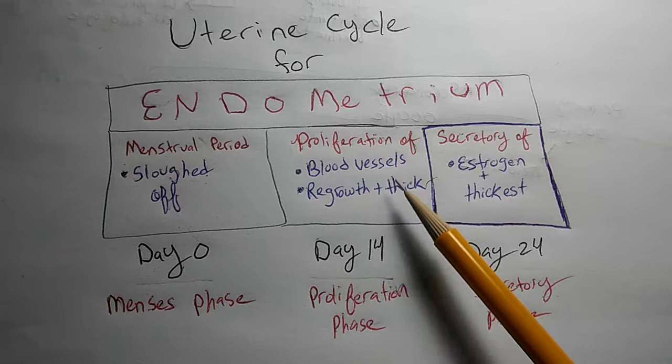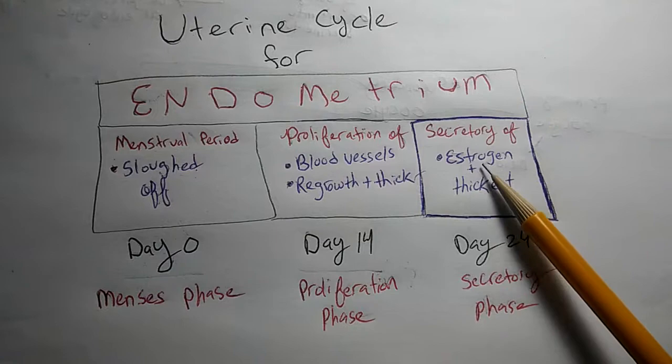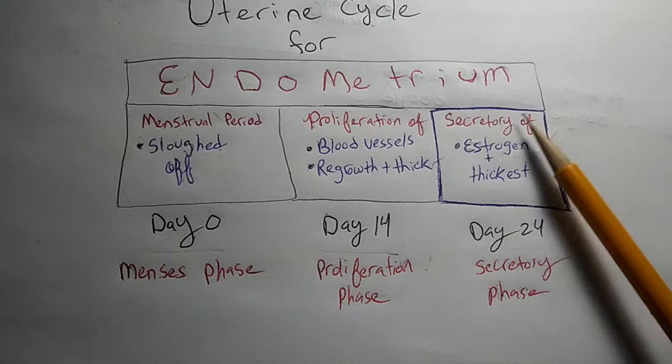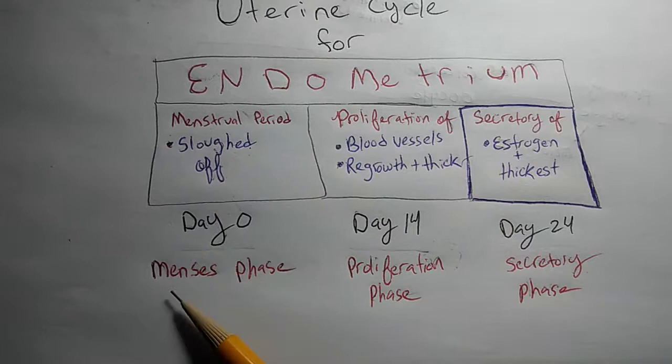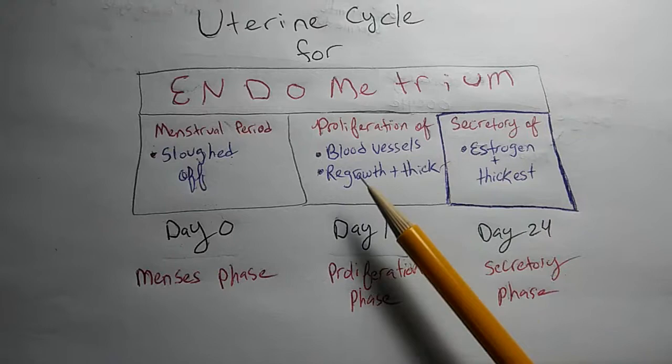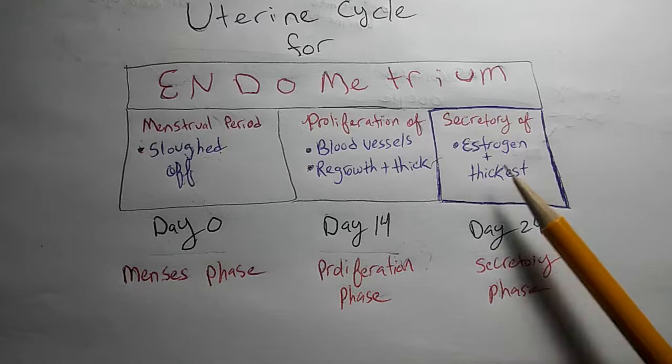The secretory of the endometrium secretes the estrogen, plus it's the thickest phase, day 24. And again, if you read it from left to right, you'll have menstrual period, which relates to the phase, menses phase, day 0, proliferation, it's on day 14, proliferation phase, secretory of estrogen, plus thickness, etc. Day 24, secretory phase. So, it just matches up nicely, and you're able to remember it.